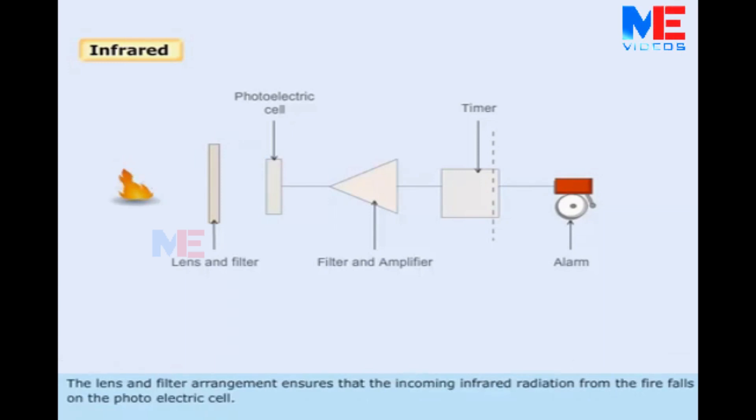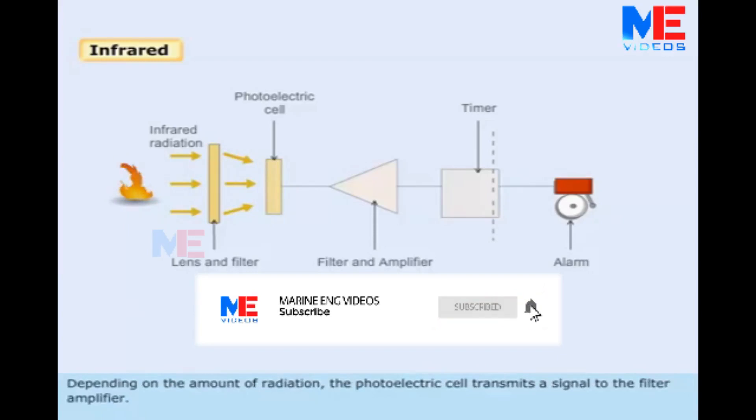The lens and filter arrangement ensures that the incoming infrared radiation from the fire falls onto the photoelectric cell. Depending on the amount of radiation, the photoelectric cell transmits a signal to the filter amplifier.